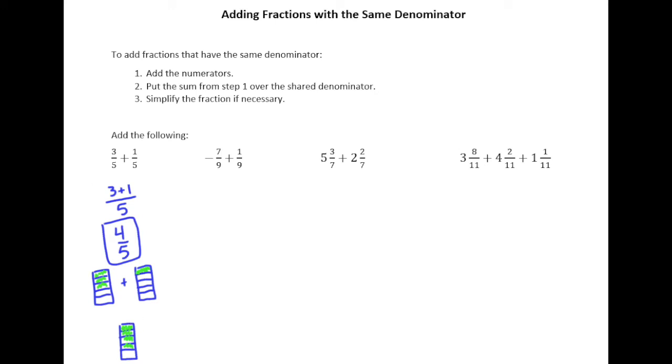So some other things to be aware of when we're adding fractions with like denominators or the same denominator is we do have to continue to think about this idea of adding negatives, just like we did back in chapter 2. So I understand here that I have negative 7 ninths plus 1 ninth, so that means when I apply step 1 I'm going to be taking negative 7 plus 1 over 9.